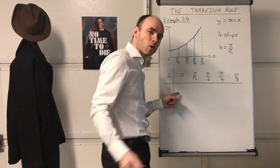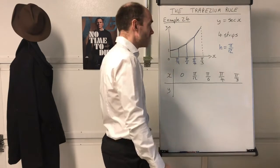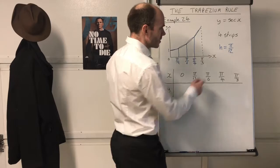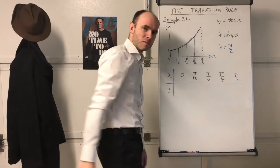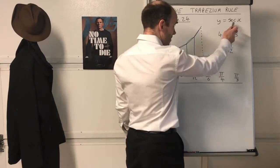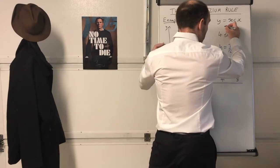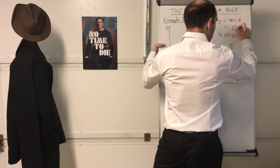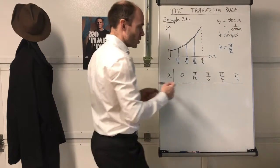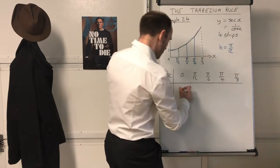You're going to work out each of the y-coordinates. How do you work them out? You just use the formula for the curve: y equals sec(x). So y equals sec(0). Remember, sec(x) means 1 over cos(x) — it's the reciprocal of cos(x). And of course cos(0) is 1, so 1 over 1 is 1.